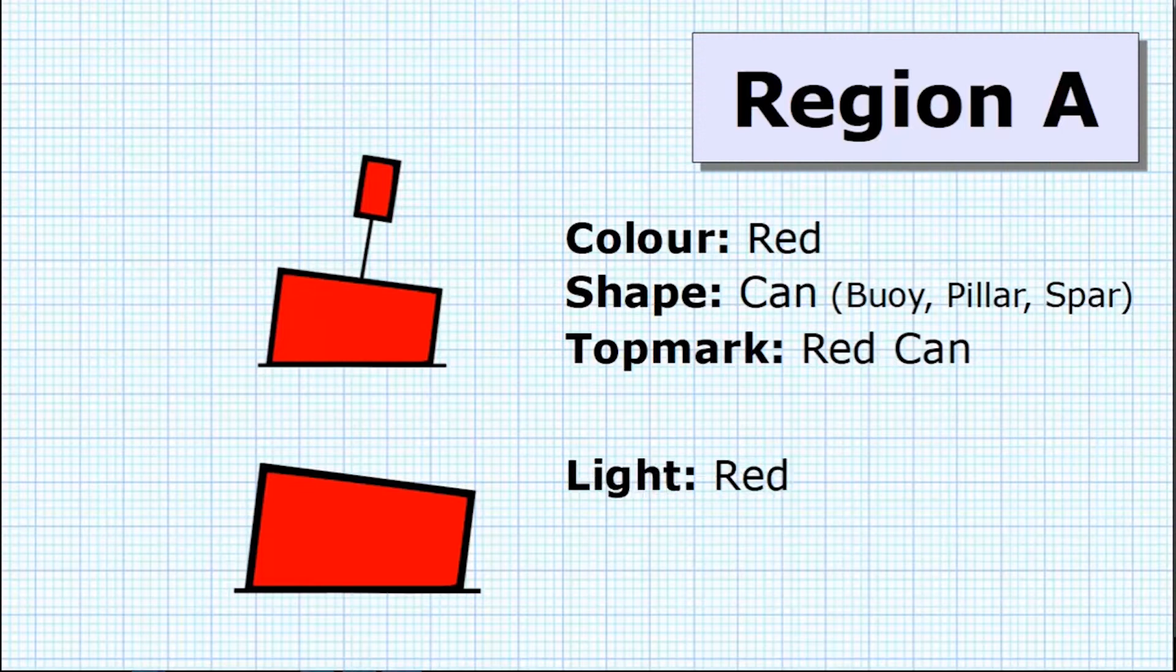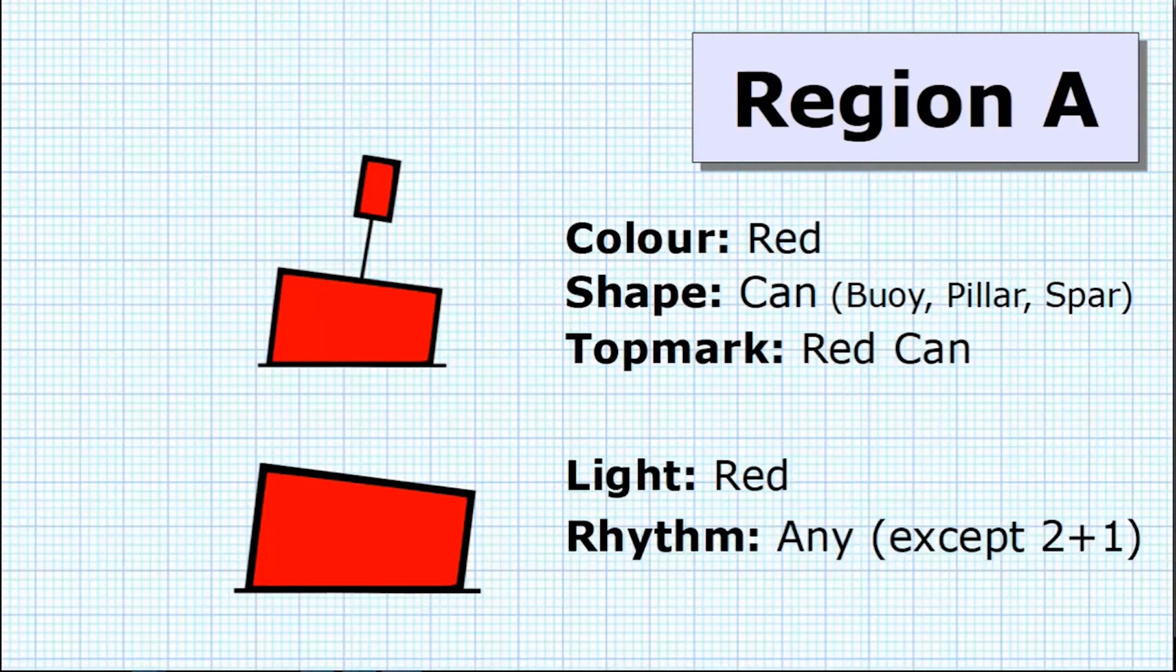At night, what about the light? It's going to be a red light and the rhythm is going to flash any except group flashing 2 plus 1. The reason being is that group flashing 2 plus 1 is reserved for preferred channel marks.